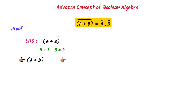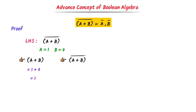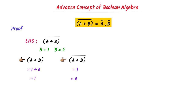In the first step, a plus b: the value of a is 1 and b is 0, so 1 plus 0 gives 1. Hence, a plus b equals 1. In the second step, we inverse that value: the inverse of 1 is 0. Thus, (a plus b) whole bar equals 0. Let this be equation number 1.